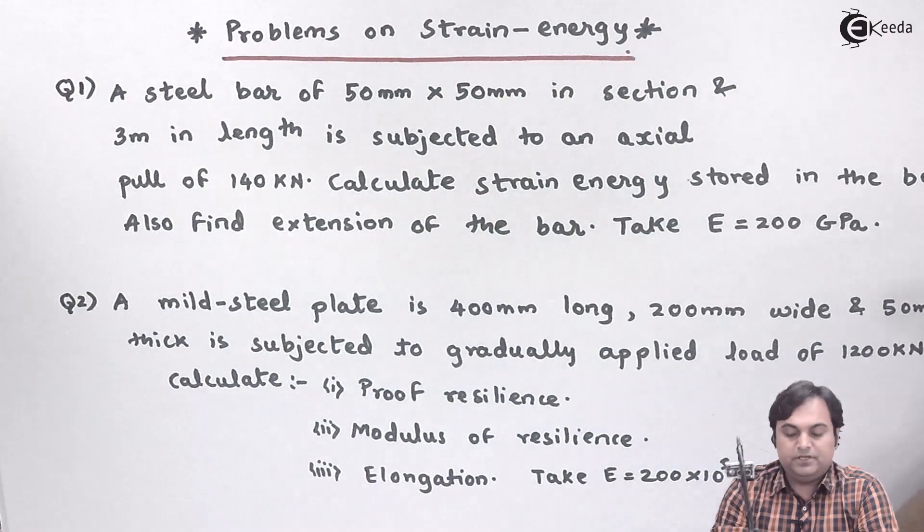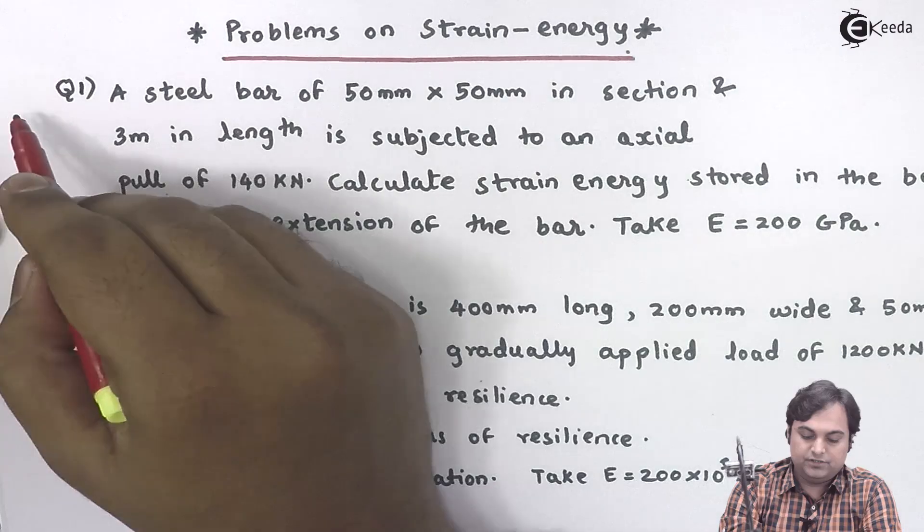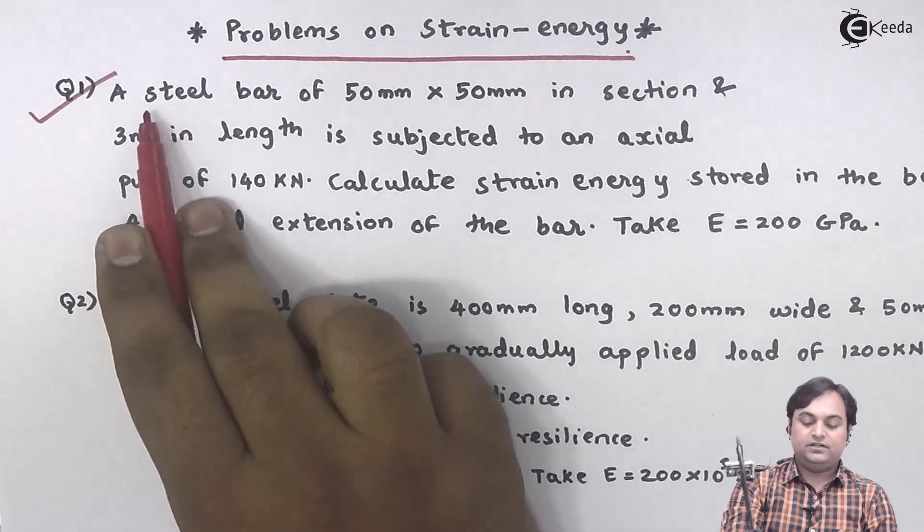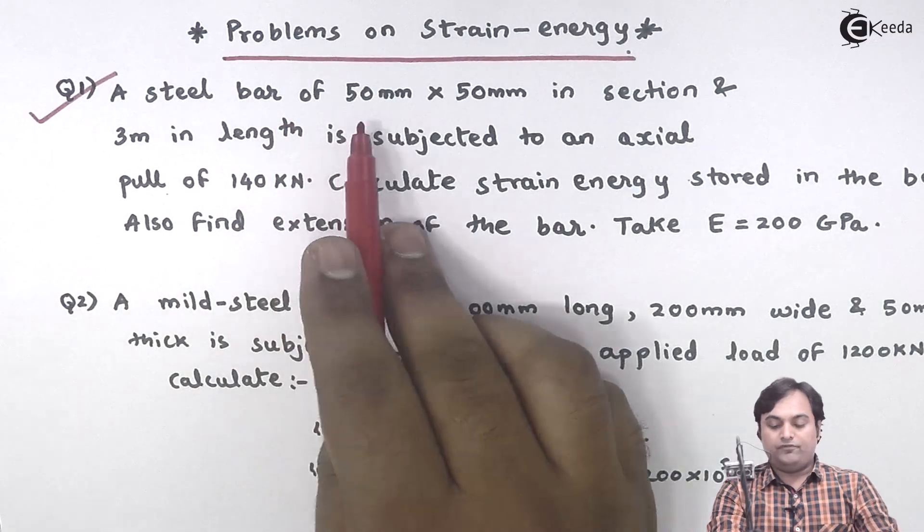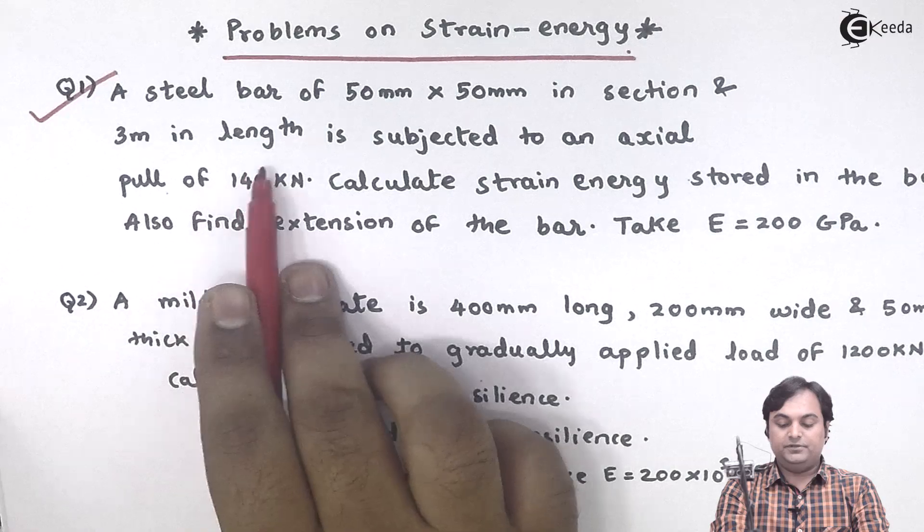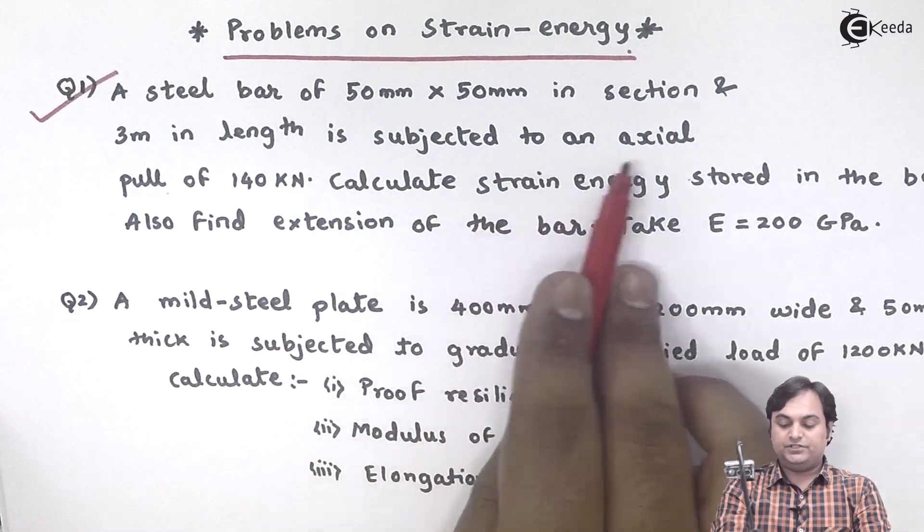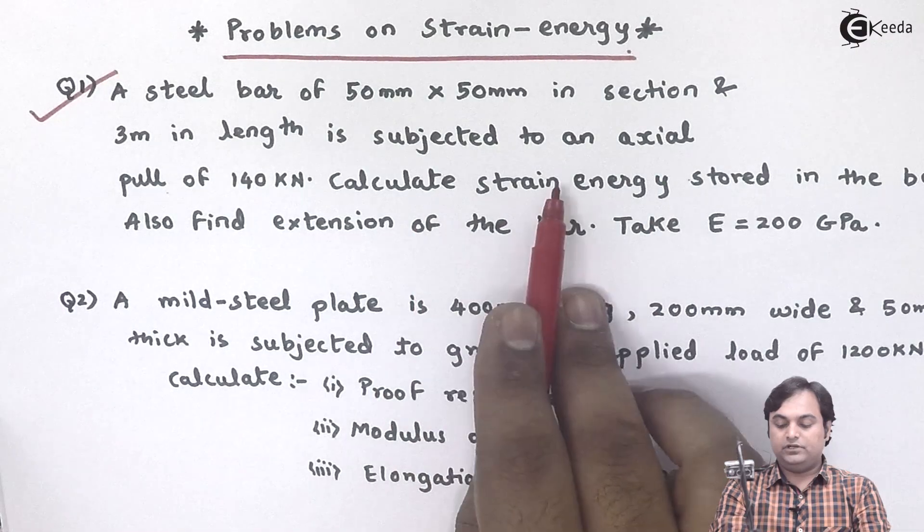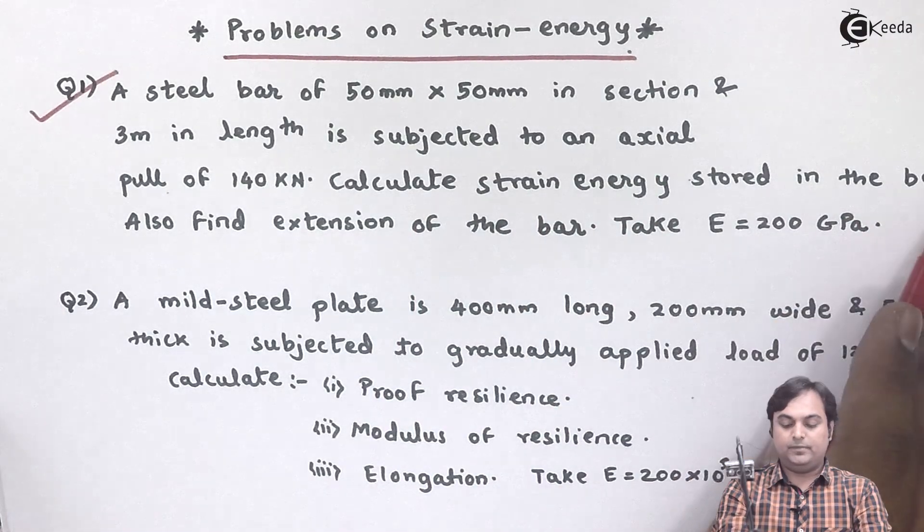Let's solve some problems based on the topic of strain energy. Here is question number one. It is given that a steel bar of 50 mm by 50 mm in section and 3 meters in length is subjected to an axial pull of 140 kilonewtons. Calculate strain energy stored in the bar.